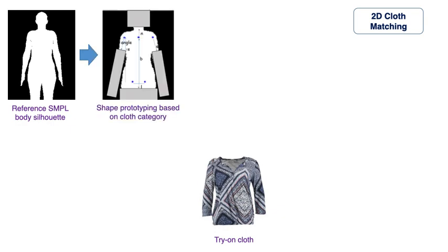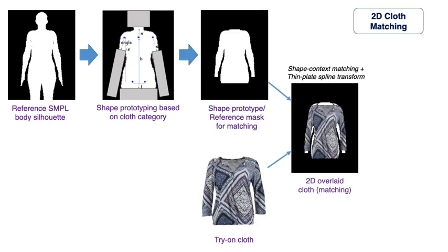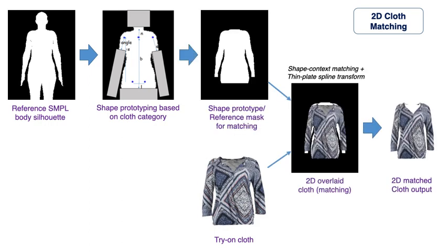We use shape context matching between the try-on cloth and the prototype shape based on its category. Then we apply thin plate spline transformation on the try-on cloth to align it against the SMPL silhouette.